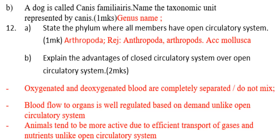Question: explain the advantages of a closed circulatory system over an open circulatory system. Number one: oxygenated and deoxygenated blood are completely separate and do not mix. Number two: blood flow to organs is well regulated based on demand, unlike in open circulatory systems.